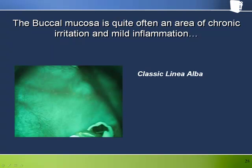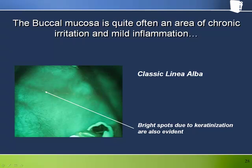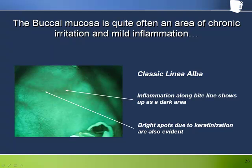Buccal mucosa is quite often an area of chronic irritation and mild inflammation. Here we see a fairly classic presentation of linea alba under Velscope. Under white light, you can see a white line corresponding to keratinized tissue right along the bite line. This can sometimes show up as a bright line under Velscope due to keratin fluorescence, but more typically appears with the associated mild inflammation dominating, showing the area as predominantly dark. Keratin fluorescence can be seen as little bright spots along the bite line, and notice the diffuse borders of the inflamed region as it fades into the brighter green of the rest of the buccal mucosa.